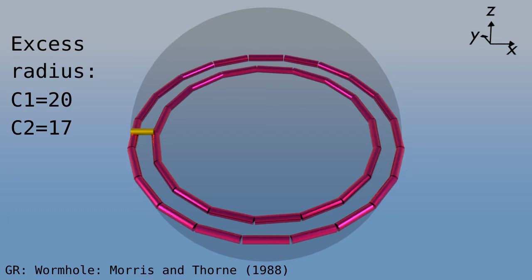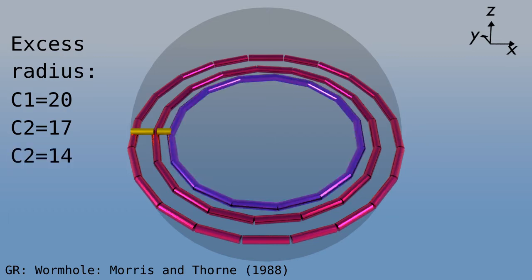Now we continue inward along the radius and come to the smallest ring, which is the throat of the wormhole. If we continue along the radius, the circumference will increase. But how do we show that?